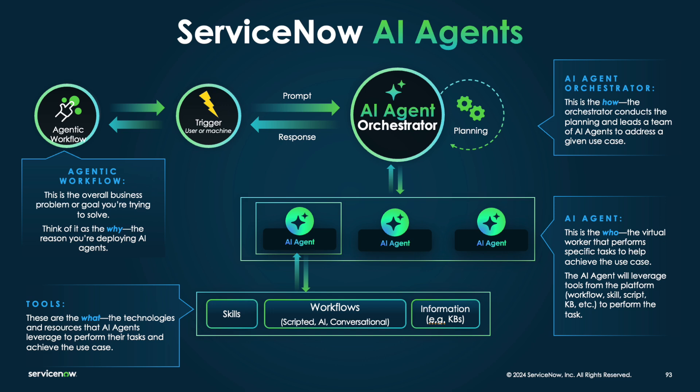How does it work? Let's take a look at the ServiceNow AI agent architecture. It all starts at the highest level — the agentic workflow. This could be something like resolving an incident, triaging an incident, or wrapping up an incident, with an automated trigger like an incident getting created.